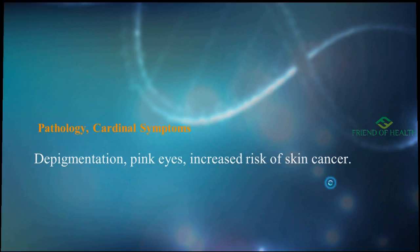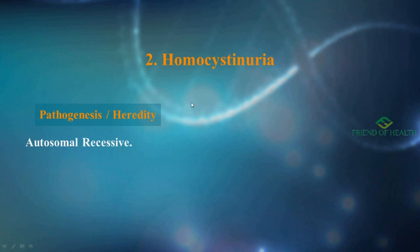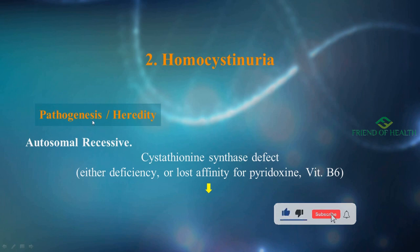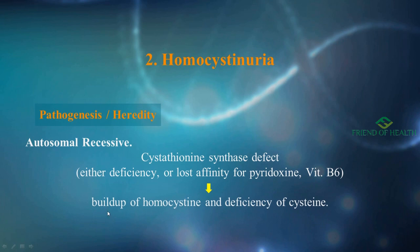The second condition is homocystinuria. It is an autosomal recessive condition. The defect here is cystathionine synthase deficiency, or lost affinity for pyridoxine (vitamin B6) — this is the core of the pathogenesis. This leads to build-up of homocysteine and deficiency of cysteine. Homocystinuria is related to vitamin B6, and cystathionine synthase defect is the important point to remember.